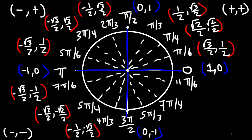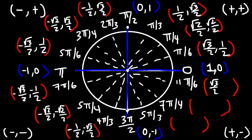Now in Quadrant 4, x is positive on the right side but y is negative below the x-axis. So 11π/6 is similar to π/6, but only y is negative. Then 7π/4 is similar to π/4, and 5π/3 is similar to π/3, but y is negative.